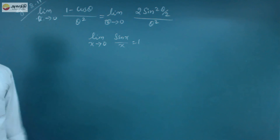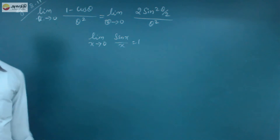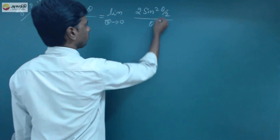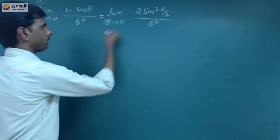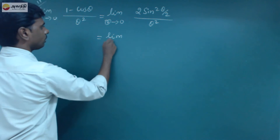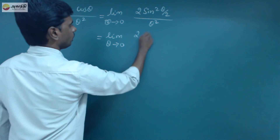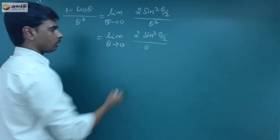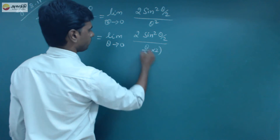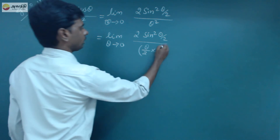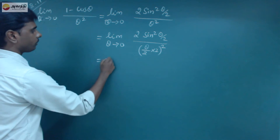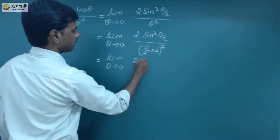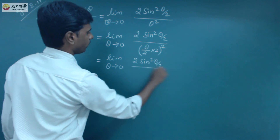So, after the sum, we change the expression to this form so we can work out the solution. If we change the variable to theta by 2, then limit theta tends to 0 of 2 sin squared (theta by 2) over theta squared.